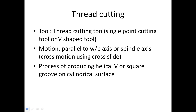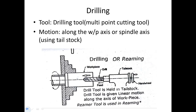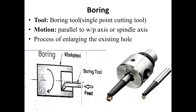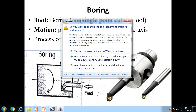This is a drilling operation performed on a lathe machine. We can place the drill bit in the tailstock, and the workpiece is rotating. The feed is given to the drill bit, that is a twisted drill bit, by using tailstock movement on the bed. Similarly, for reaming and boring operations, this boring tool can be placed inside the tailstock and we can enlarge the diameter of the drilled hole.